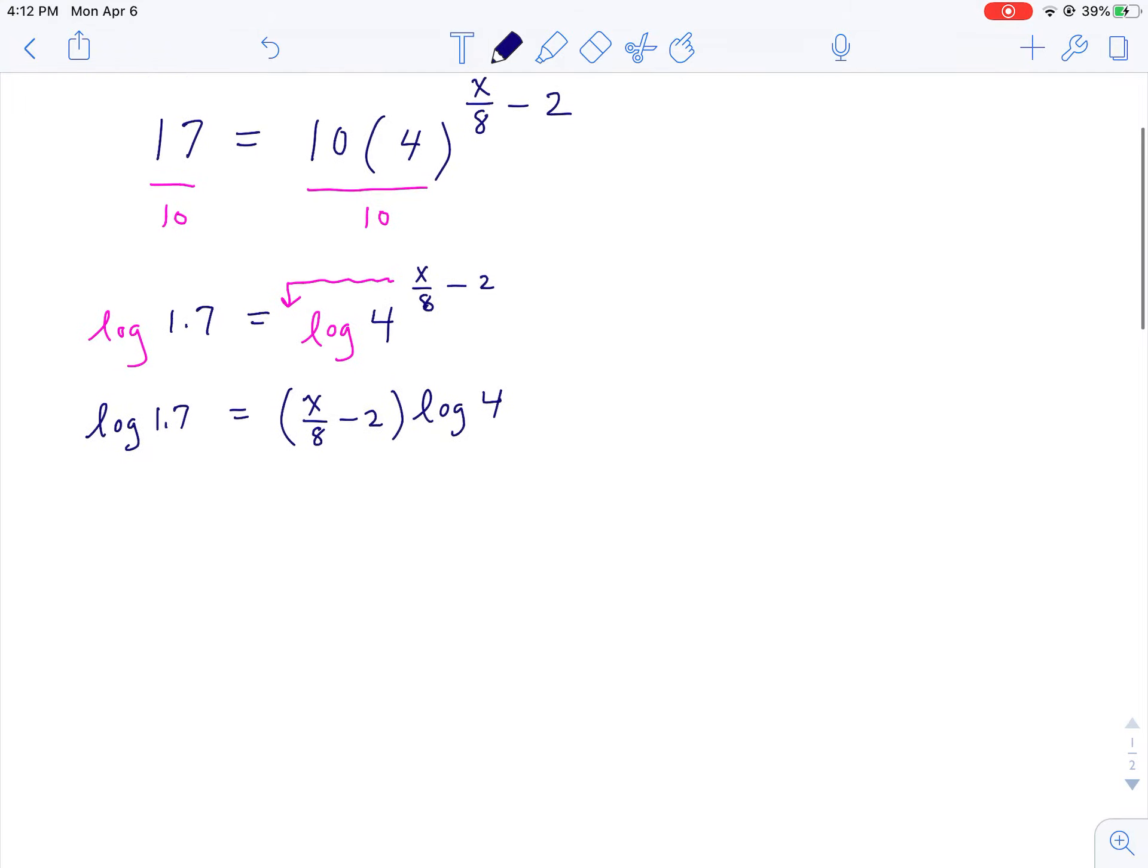So now this is actually a linear equation, to be honest with you, it's really x of the first power, those logs are constants. So you just start peeling everything and get it over to the left side of the equation, get x by itself. So of course what we do first, we divide by log 4.